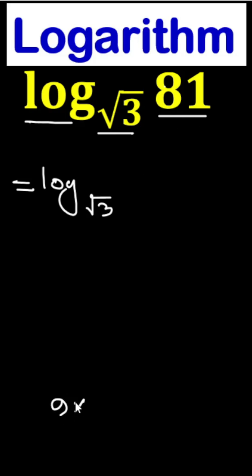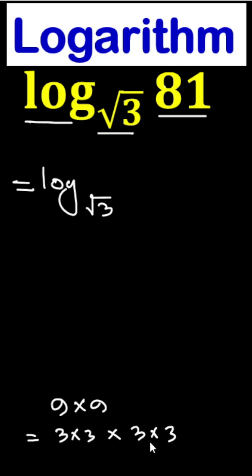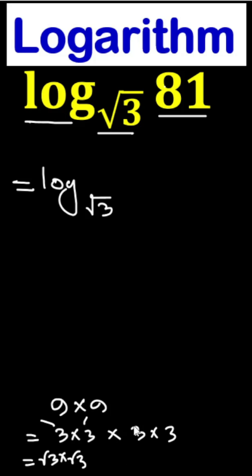Look, 9 times 9 is 81. Again, 3 times 3 times 3 times 3 is also 81. And these 3, we can write root 3 times root 3. Similarly, this one is also root 3 times root 3. So here we have 2 root 3, four times.